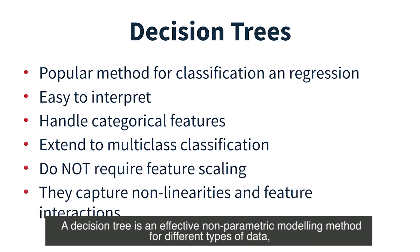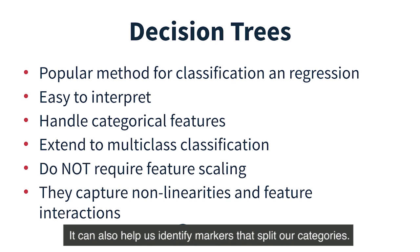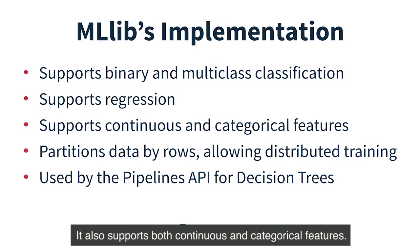A Decision Tree is an effective non-parametric modelling method for different types of data. It can handle both continuous and categorical data, and it can also help us identify markers that split our categories. MLlib's implementation of Decision Trees supports both binary and multi-class classification, as well as regression, and supports both continuous and categorical features.